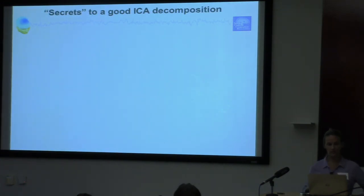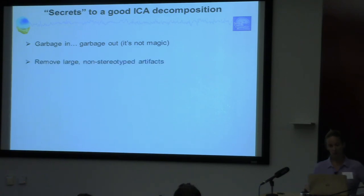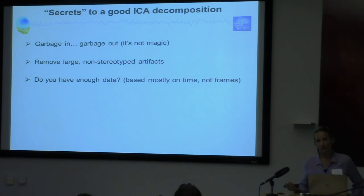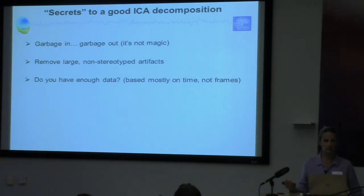The secrets to a good ICA decomposition are fairly few. First: garbage in, garbage out. If you have absolute nonsense data, there's very little ICA can do. So you want to clean the data as much as possible — remove large non-stereotyped artifacts over short periods of time. The other thing we run across frequently is whether people have enough data. Sometimes people try to run ICA over two minutes of data with 70 channels, and that's just not enough time for ICA to understand what are independent components. You want to make sure you have as much data as possible.